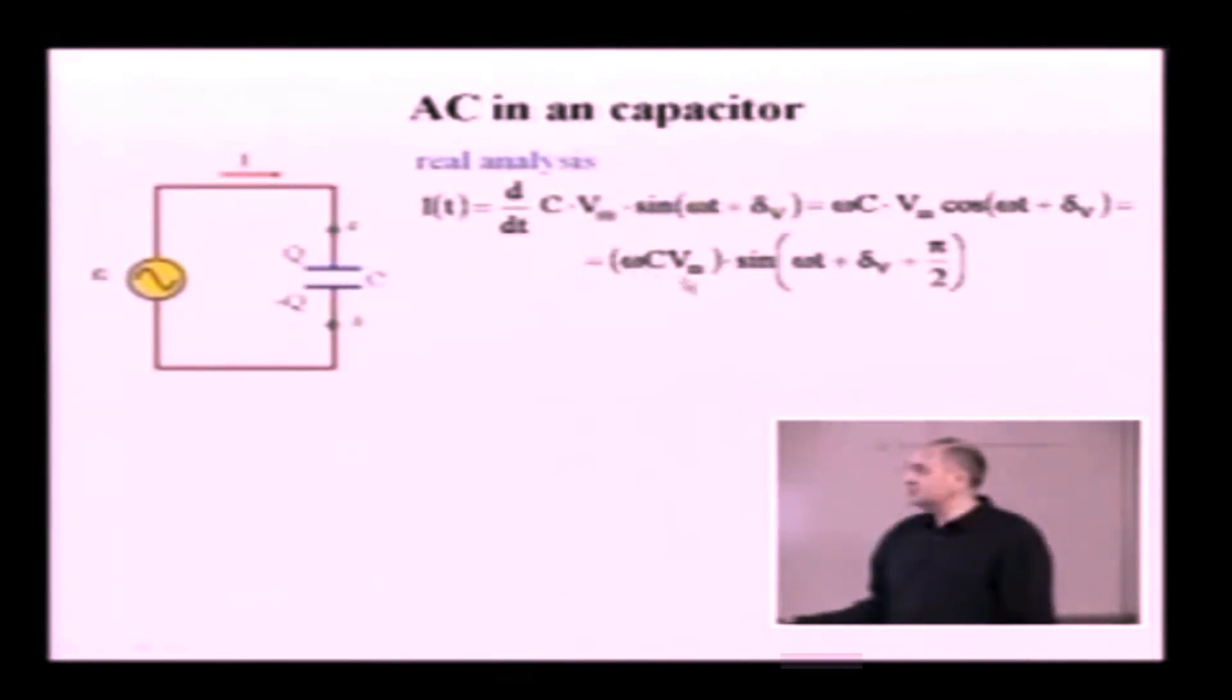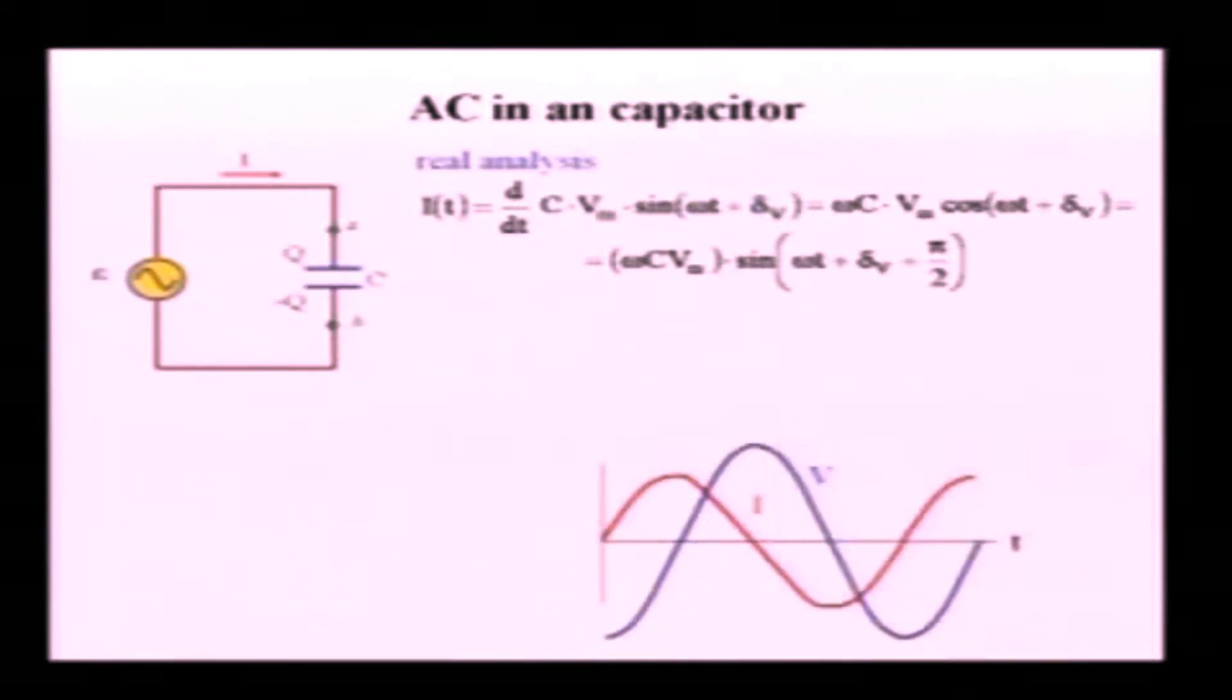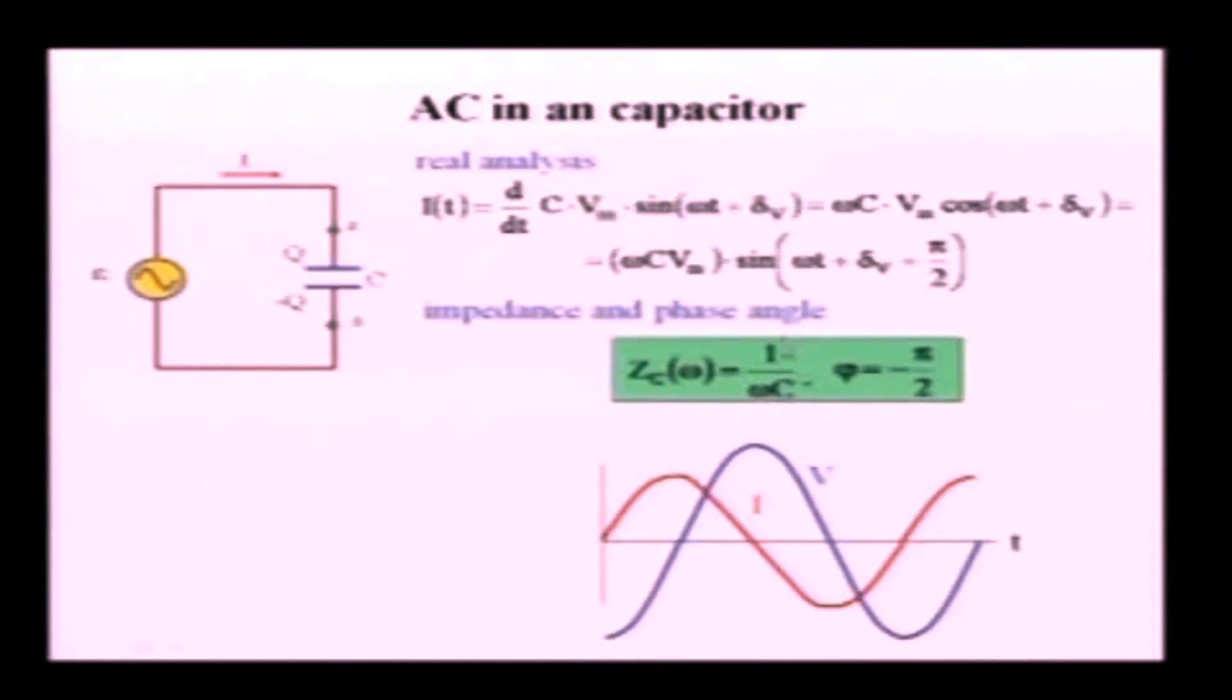This is, this expression is equal to what? This is peak value of the current. So, it should go to the numerator or the denominator? Denominator. What should be in the numerator? Vm. Correct. So, Vm and Vm cancel. And impedance of the capacitor is one over angular frequency times capacitance.